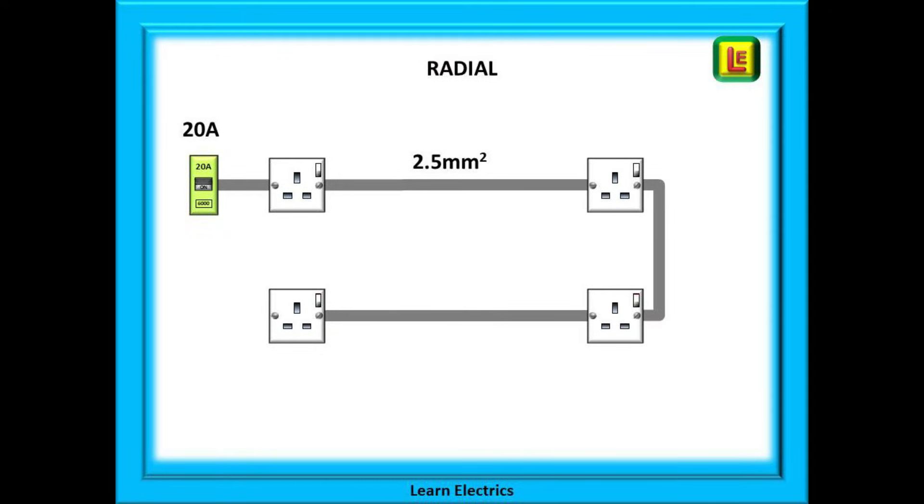Here is another radial circuit. It doesn't matter to the electricity where you take the cables. In this example the last socket might be very close to the consumer unit and this does happen.